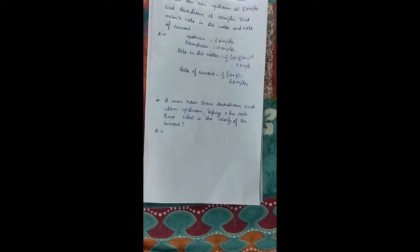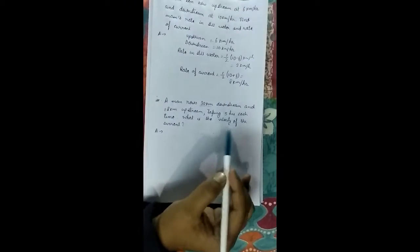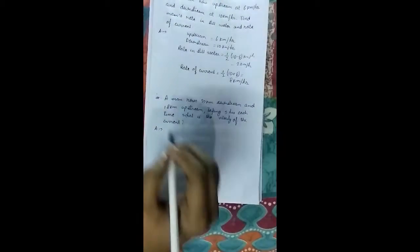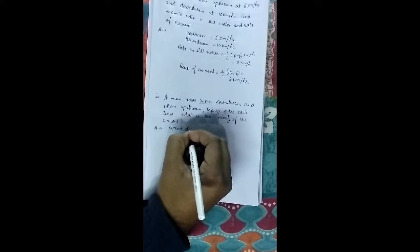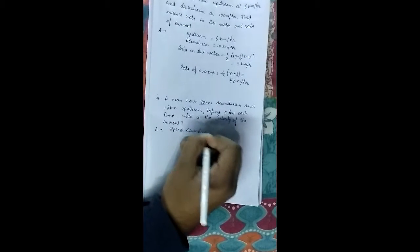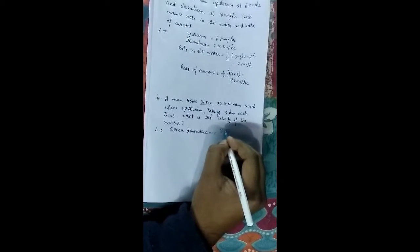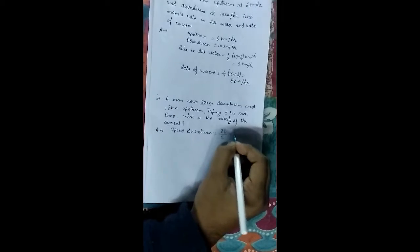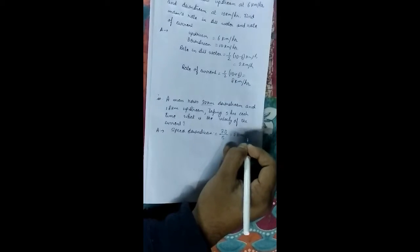We have given distance and hour so we will find the speed. Speed in downstream will be the distance by the time. So it is 30 by 5, so it is 6 km per hour.